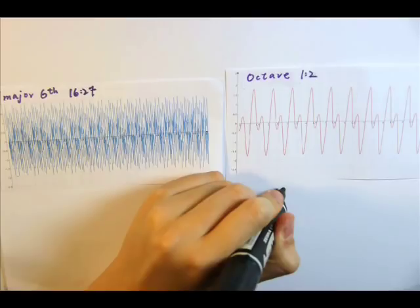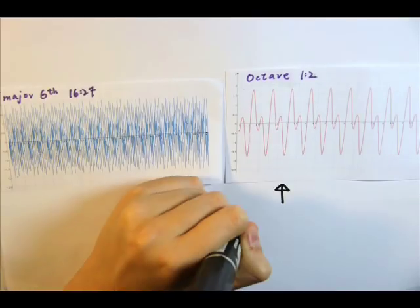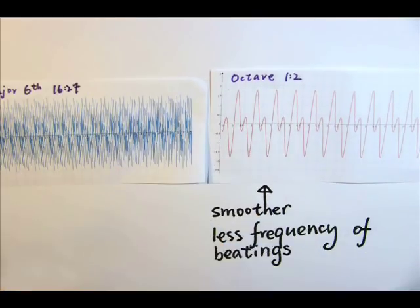We might also compare the graphs of a major sixth interval with an octave. Since an octave graph is smoother and the beat frequency much lower than that of a major sixth interval, an octave sounds more pleasant than a major sixth interval.